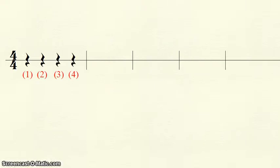We'll start with the quarter rest. It receives one beat. When counting, we will give each quarter rest one full beat, written in parentheses.